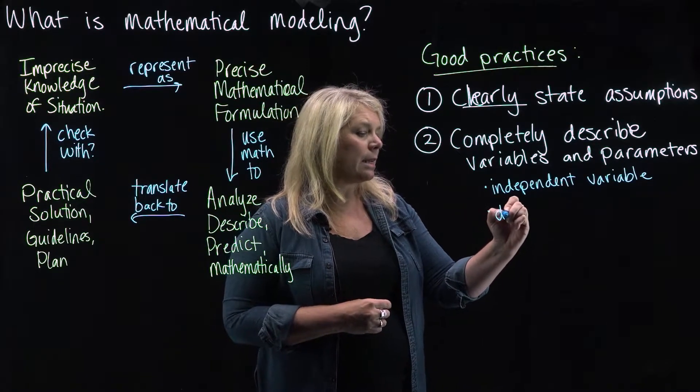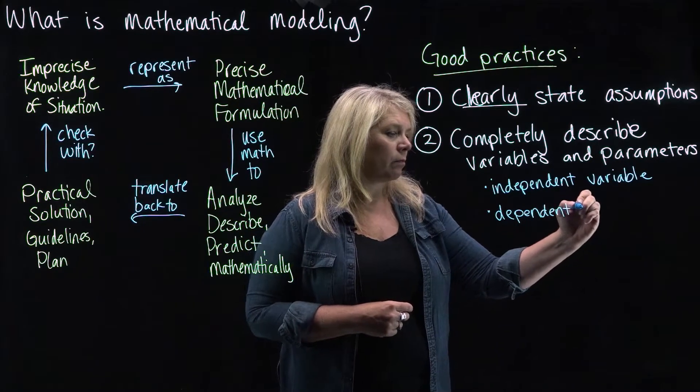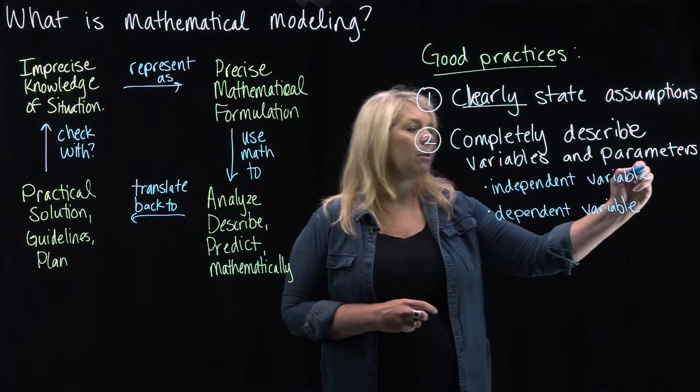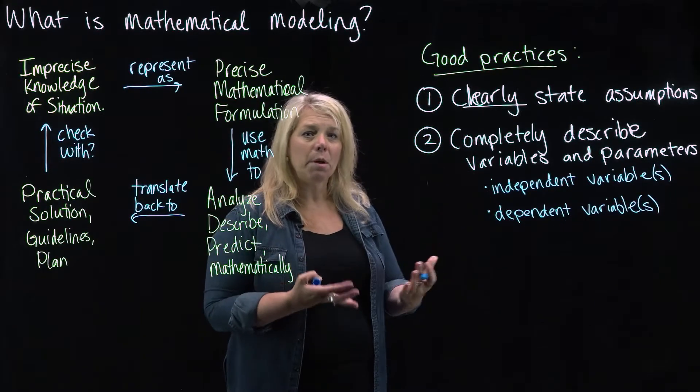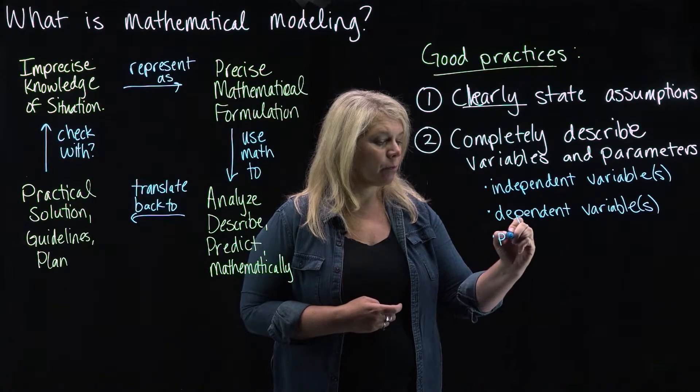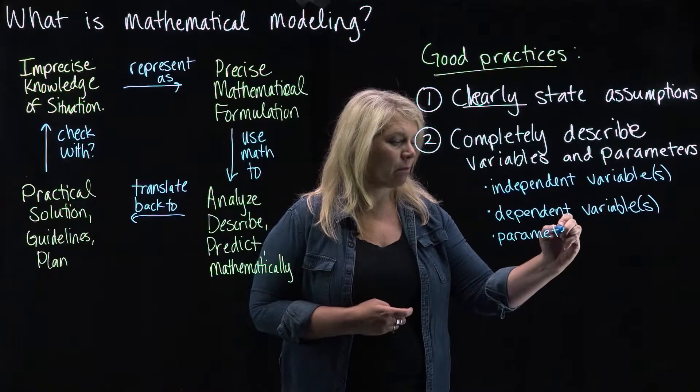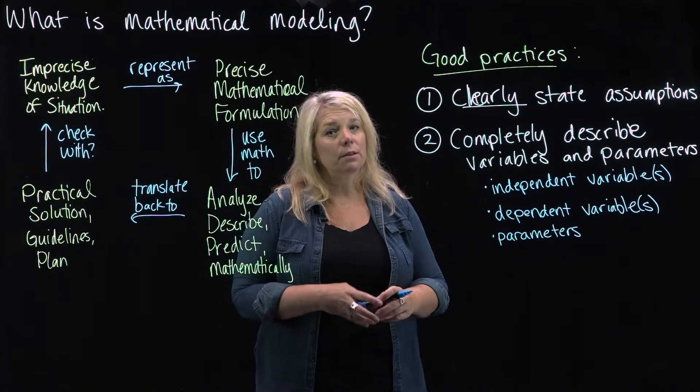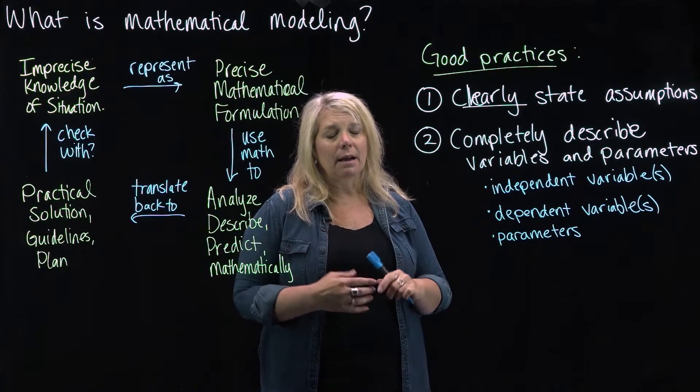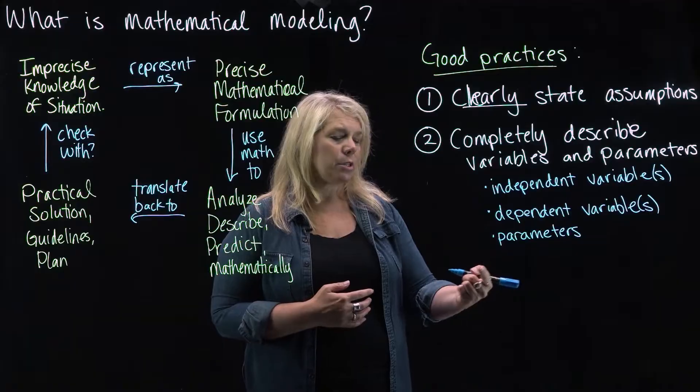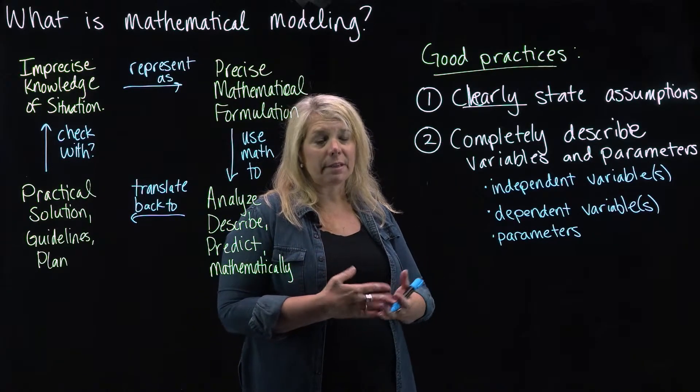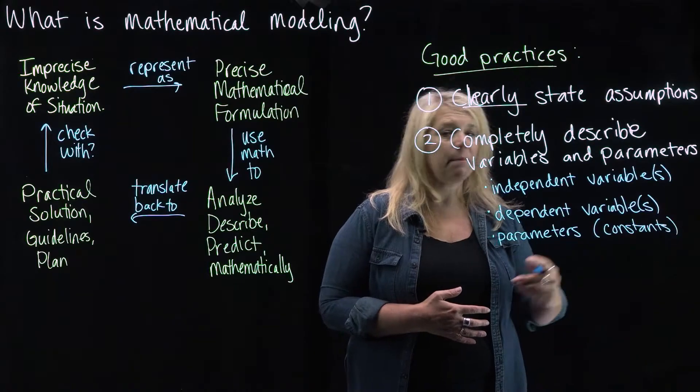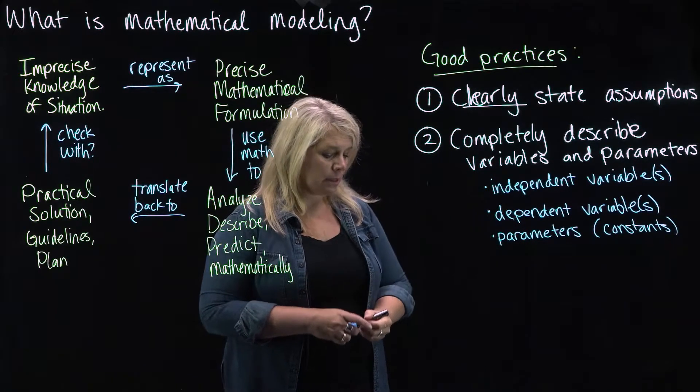And then a dependent variable. When you look at more complicated differential equations, perhaps you have more than one independent variable and more than one dependent variable, but we're going to start with just one of each. And then parameters. Parameters in general are constants. Sometimes those constants are known precisely, and sometimes those constants are not known precisely. And perhaps they can take on different values in different models. So sometimes parameters are represented by numbers. Sometimes they're represented by letters if it's an unknown constant. But these are in general constants. But they might be constants that can take on different values in different mathematical models.